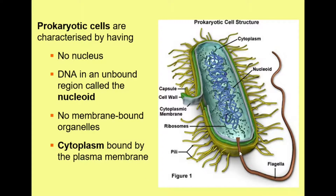One other structure we see on some prokaryotic organisms — bacteria and archaea — is this tail-like structure called a flagellum (singular) or flagella (plural). It projects out of the body of the bacterium and twists almost like a helicopter rotor, enabling the organism to move — providing it with locomotion over short distances. So the basic structure of a prokaryotic organism: only archaea and bacteria have prokaryotic cells. Their cells are simple, tend to be much smaller than eukaryotic organisms, do not have a true nucleus, their DNA is in the unbound nucleoid region, and they have no membrane-bound organelles.